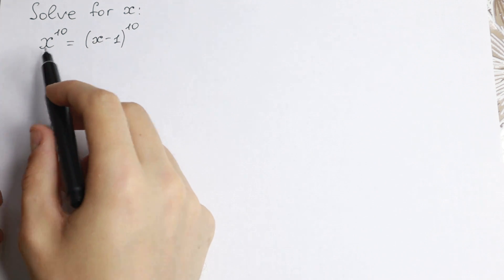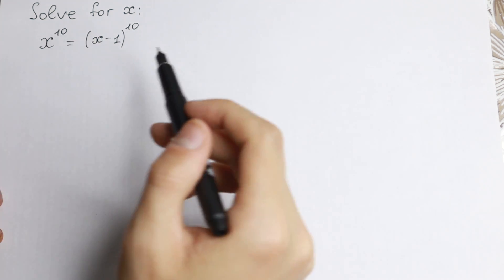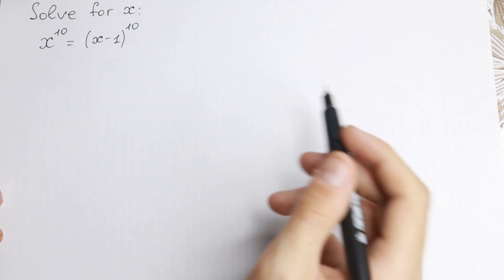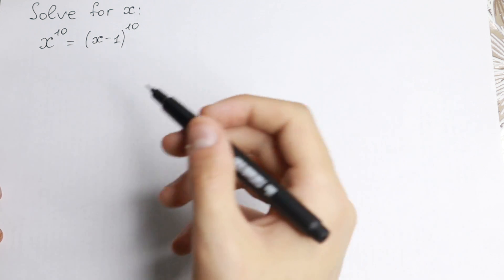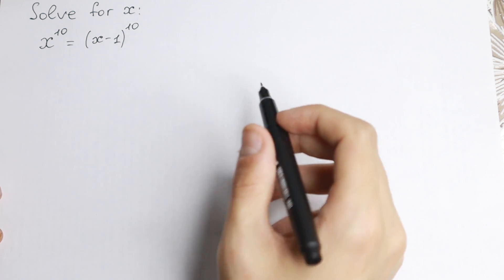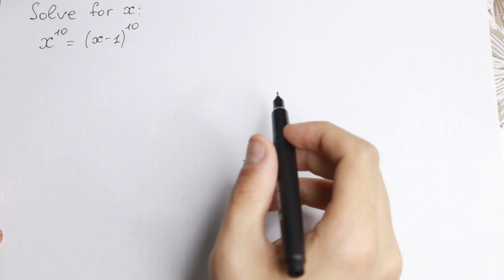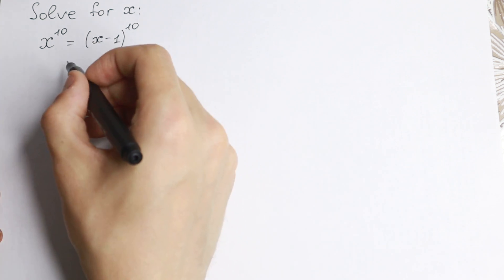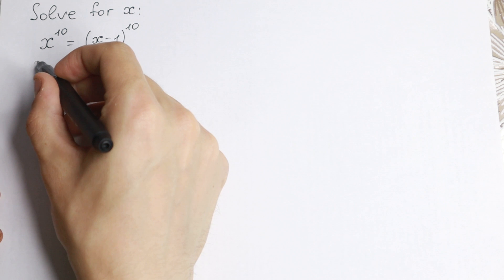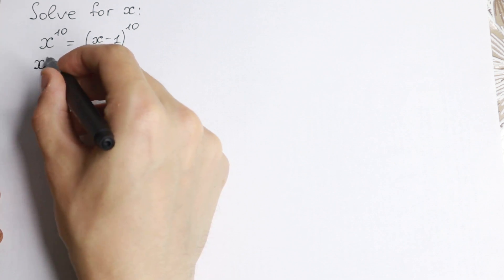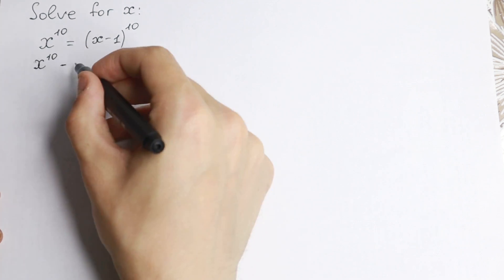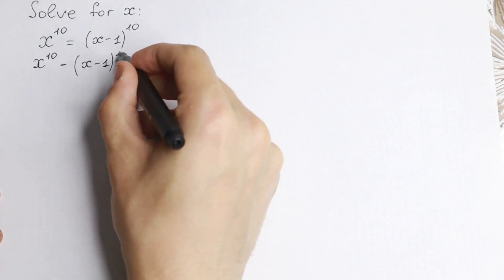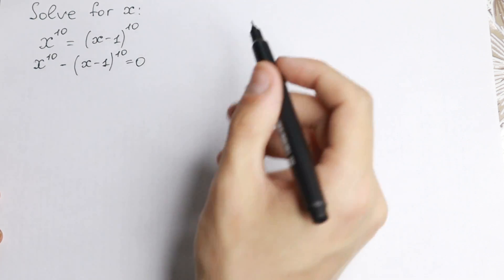As you can see we have a lot of roots — we have 10th power, so we have 10 roots of course. So let's solve it. Let's bring this expression to the left hand side. We will have x to the 10th power minus x minus 1 to the 10th power equal to 0.